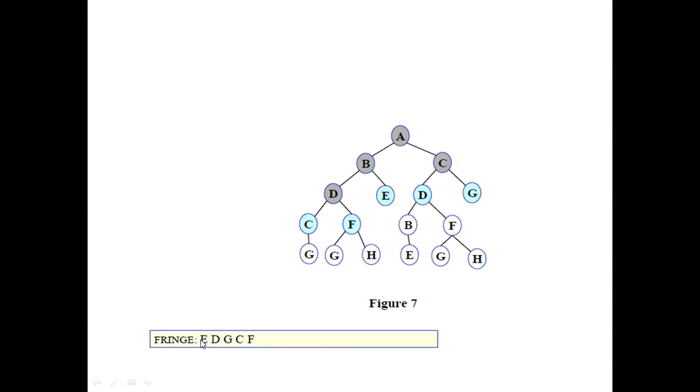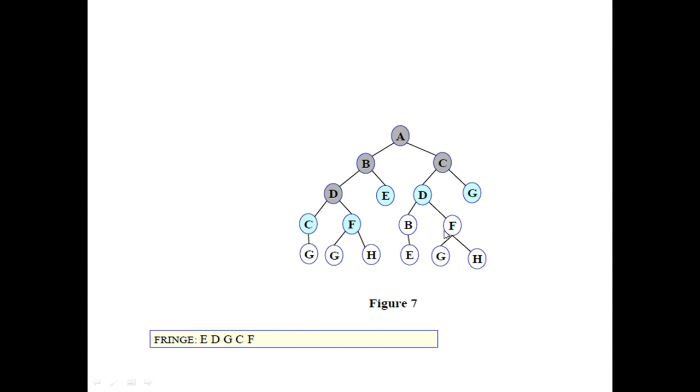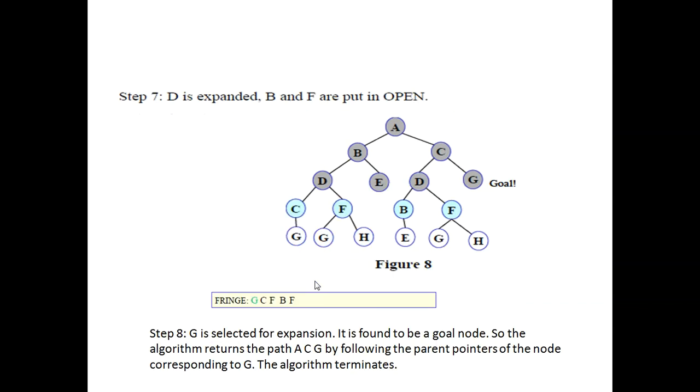After that, E will be picked. This E is blank, it's basically a leaf node. It does not have any successors with it. We will just remove it from the fringe and pick D from here. When D is picked, D is having successors B and F, and we will choose them. B and F are selected and they have been added towards the right portion.